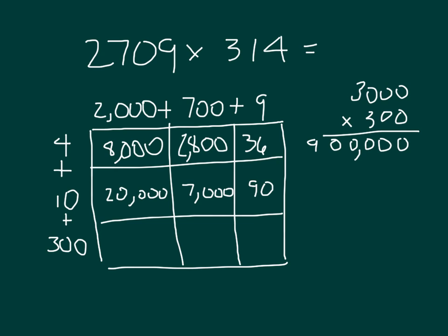That final row, 300, 3 times 2, is 6, followed by 5 zeros. So that 300 times 2,000 is 600,000. We have 300 times 700, so we get 21, followed by 4 zeros. That's 210,000. And finally, 300 times 9, which is 2,700.